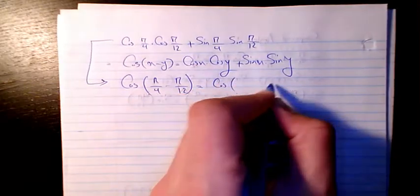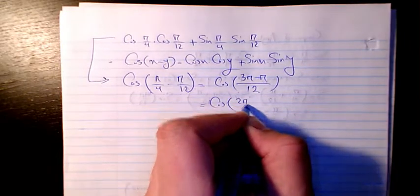So let's see how to subtract this one. We have two different denominators, so we need to use a common denominator. If you convert it, it's going to be 3 pi minus pi. It will be cosine 2 pi over 12.